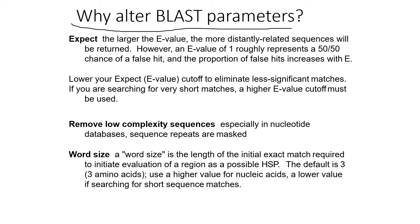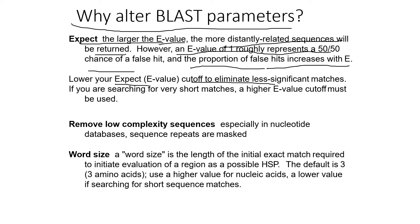Why alter BLAST parameters? This is an important question. If you expect a larger E-value, more distantly related sequences will be returned. A large E-value means more non-significant or unreliable sequences. An E-value of one represents roughly a 50-50 chance, and the proportion of noise increases with E. Lower your E-value cutoff to eliminate less significant matches — so you get fewer but better matches.